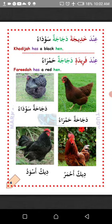Dajajatun sawda means black hen; dikun ahmar means red cock; dikun aswad means black cock. Note that ahmar is muzakkar (masculine) and hamra is muanath (feminine); aswad is muzakkar and sawda is muanath. For example, Khalidun rajulun aswad — Khalid is a black man; and Zainab imra'atun sawda — Zainab is a black woman. One cannot say Zainab imra'atun aswad — that is wrong because Zainab is muanath while Khalid is muzakkar. Lagalaka fahimt — I hope you understand. Masha Allah.